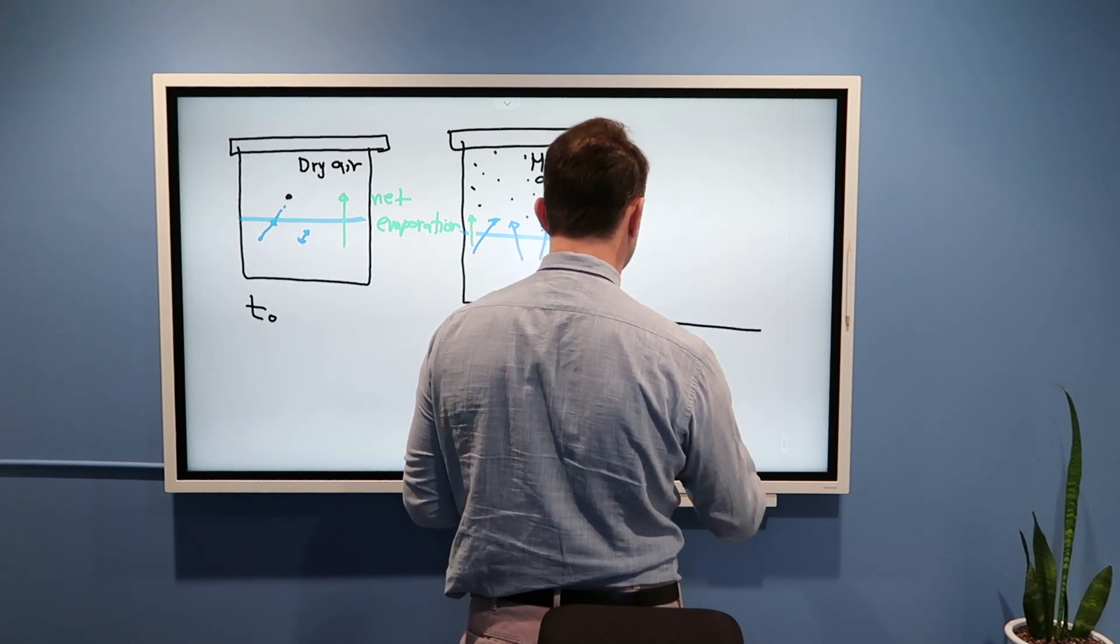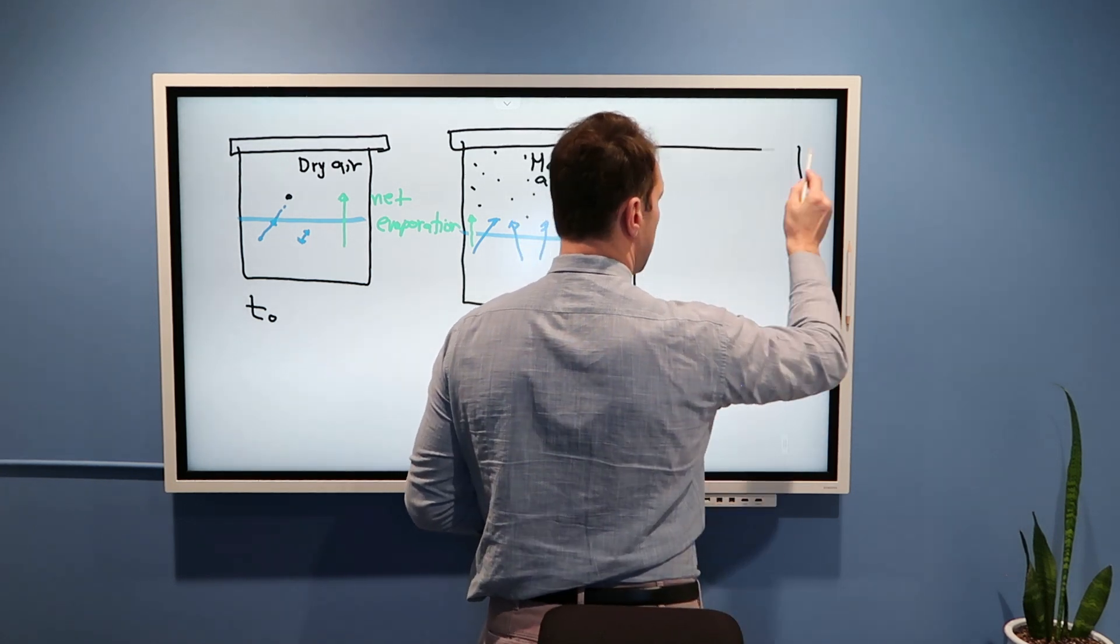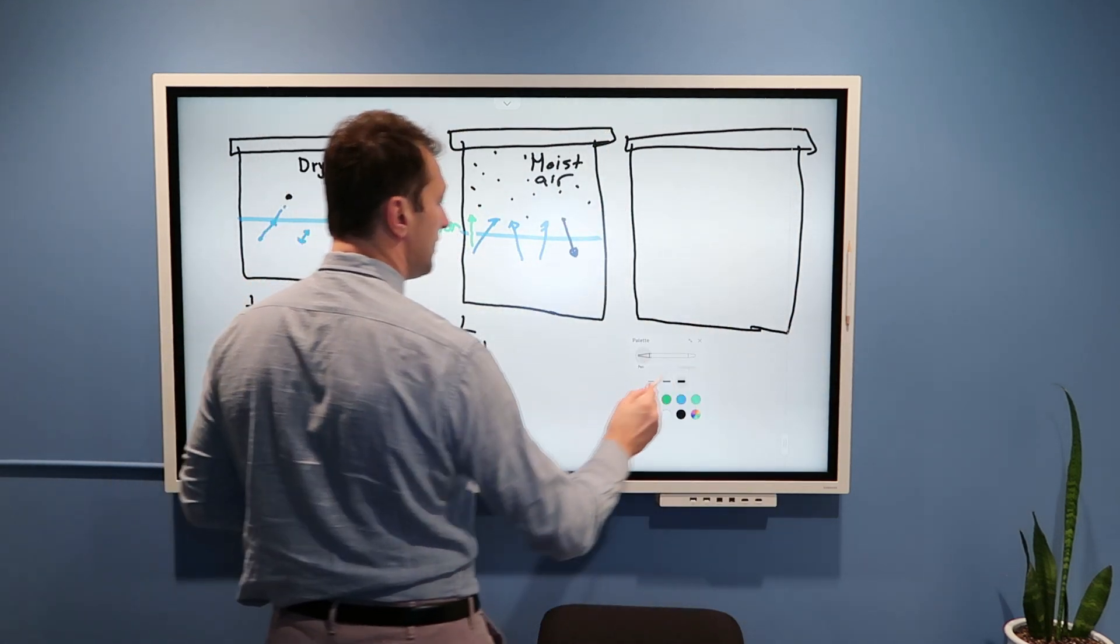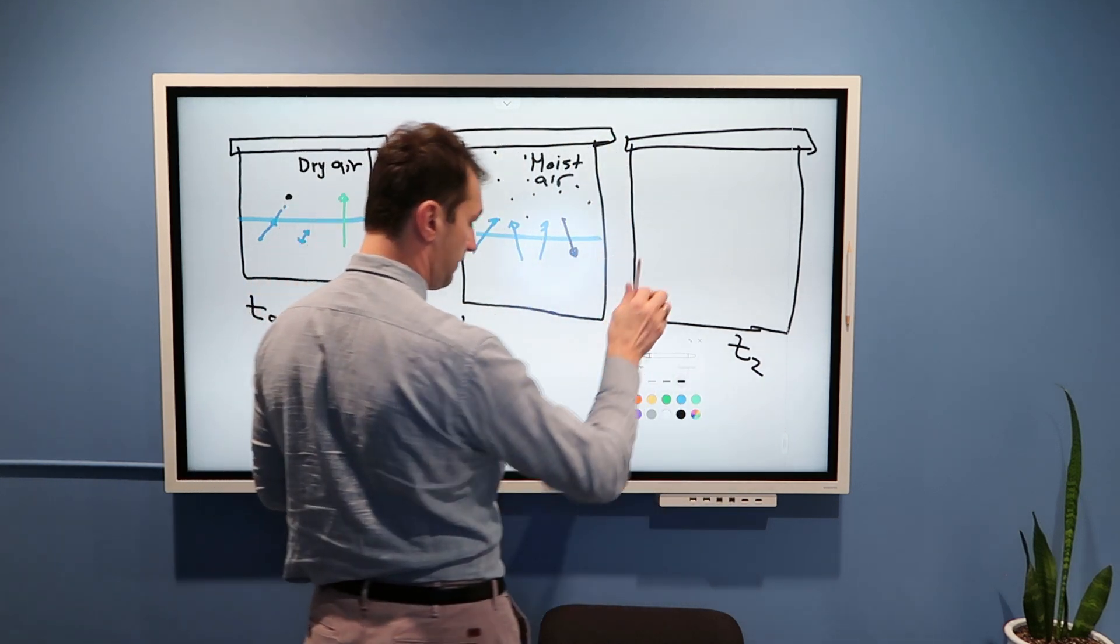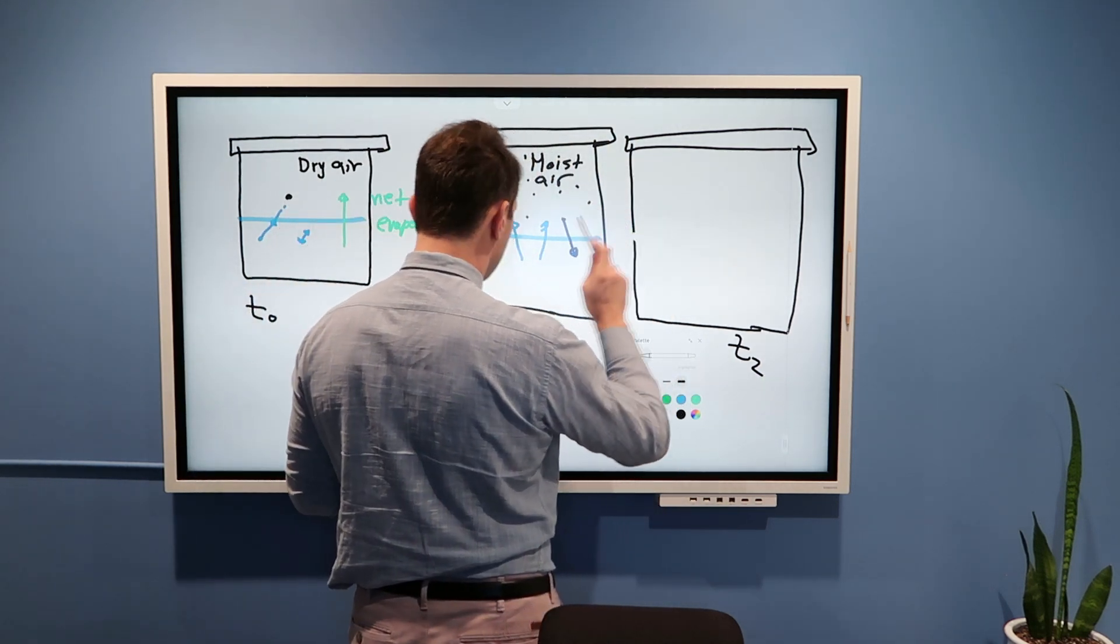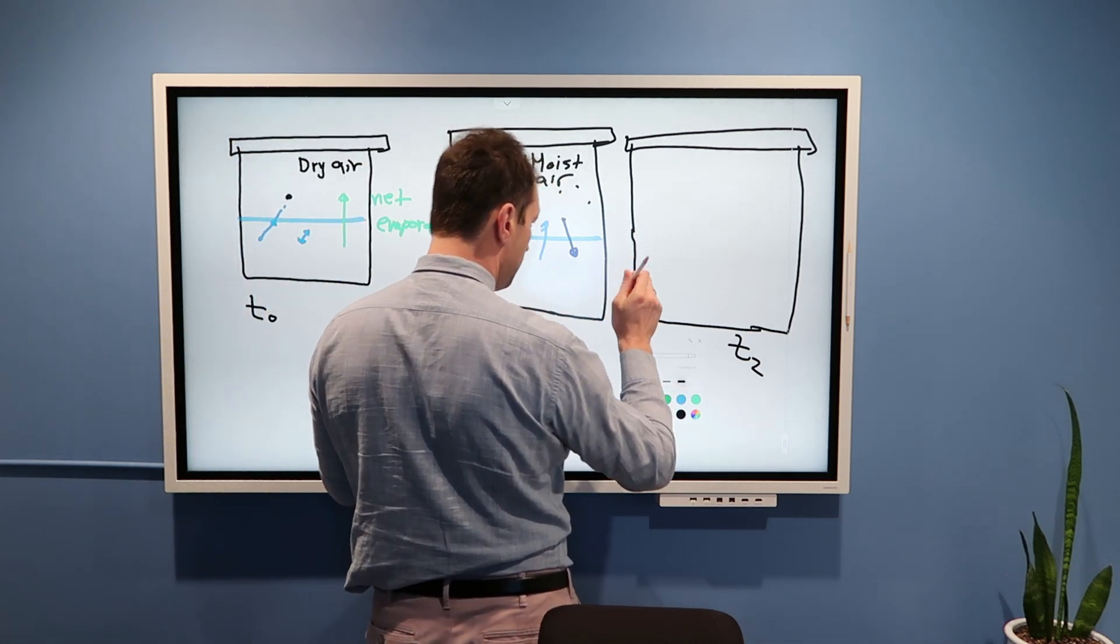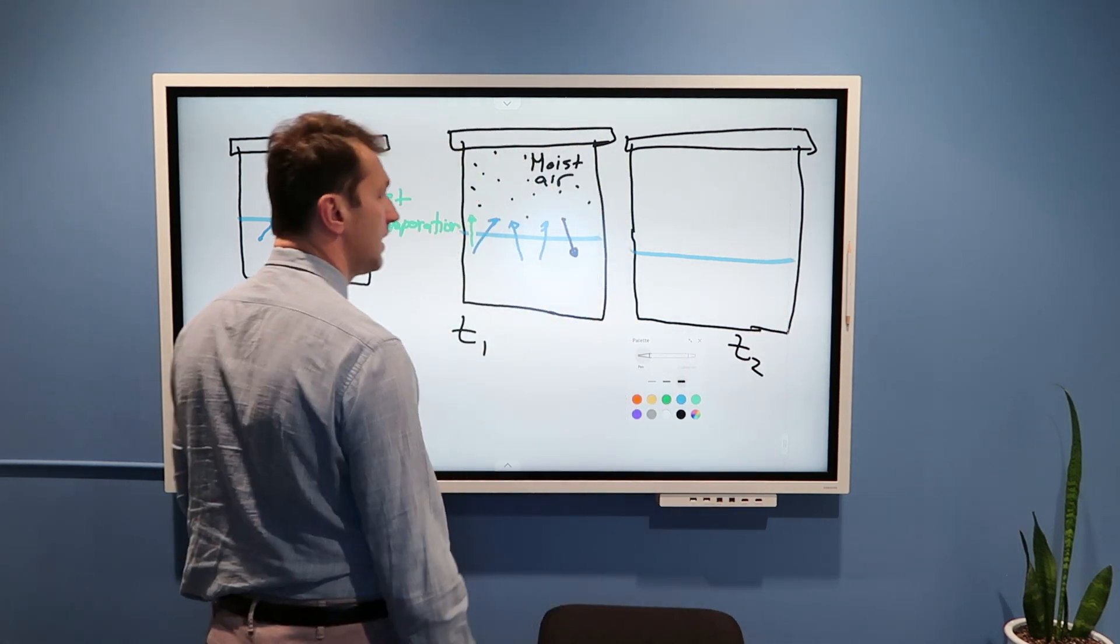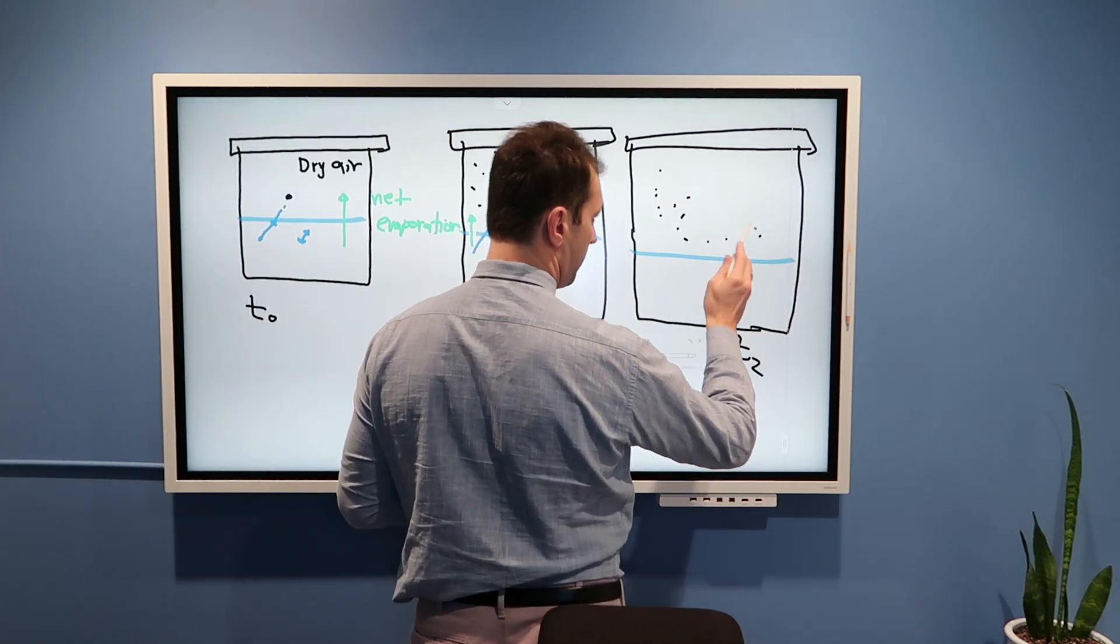And finally, let us conclude now this thought experiment with the case where I have this same container. So this is time T1, now at time T2, I have this same container with, because I had net evaporation still in this case, that means that the line of liquid water moved even further down, and now I have very moist air over here with a lot of water vapor molecules.